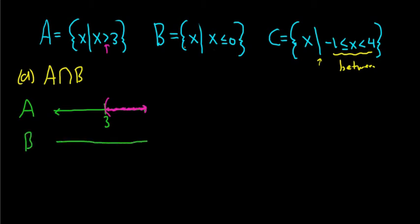So I'll draw a number line, and then here is 0. And then B is the set of all x such that x is less than or equal to 0. So that means it's all the numbers over here. And then less than or equal to, well the equal to part means that you use a bracket, you include the 0.